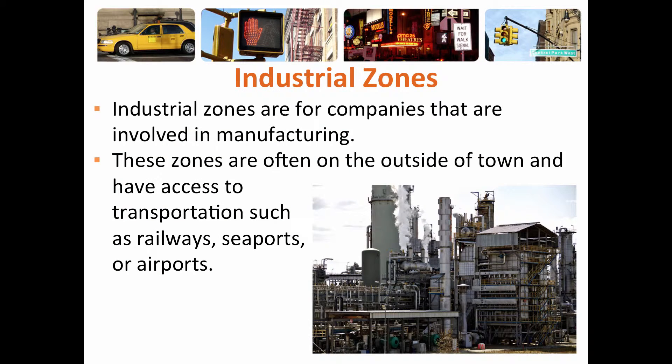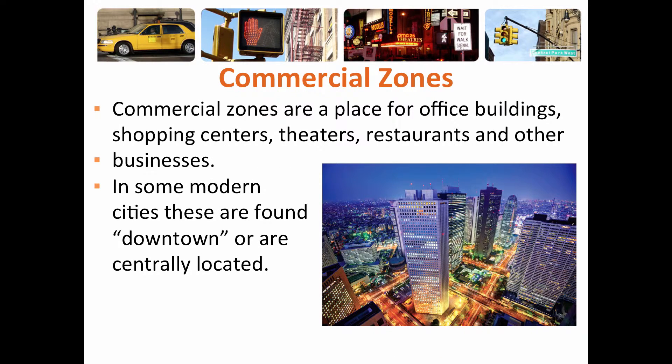We have divided our cities up into different zones. Industrial zones are for manufacturing — oftentimes on the outside of town or right near the CBD, usually along transportation routes like railways, seaports, and airports, so that products made there can be shipped. Next we have commercial zones, which are places for office buildings, shopping centers, theaters, restaurants, and other businesses.